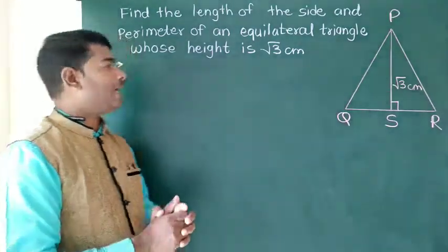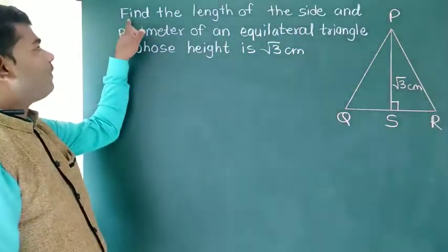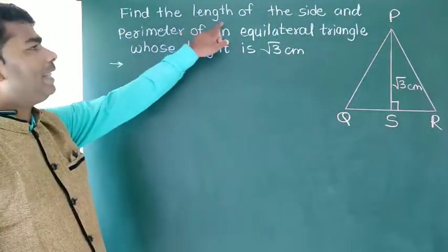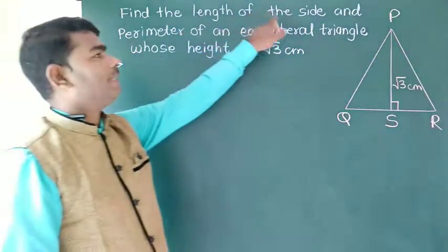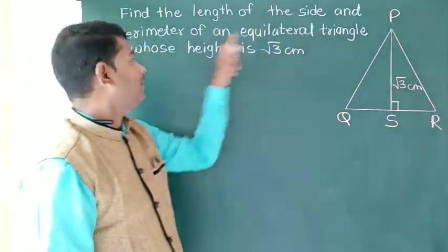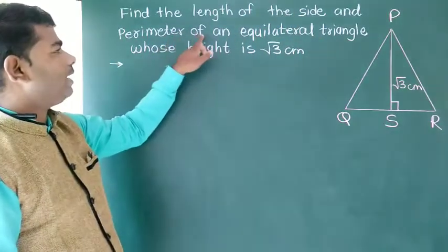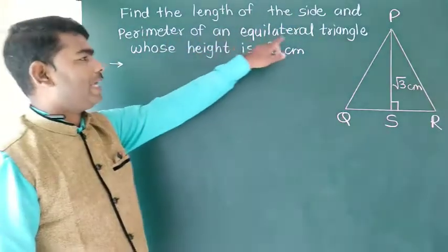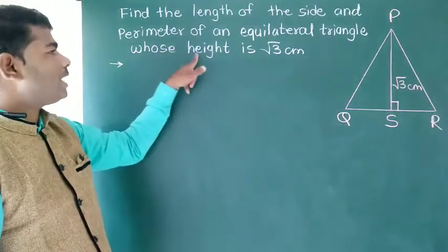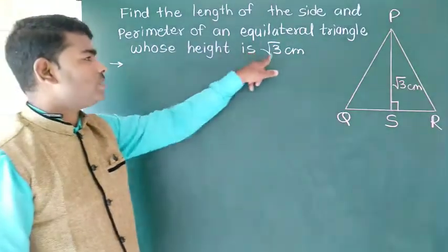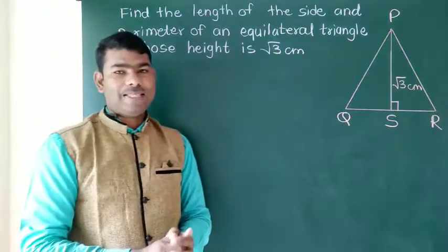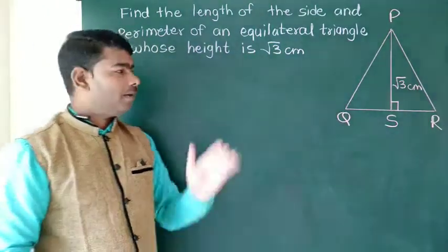Find the length of the side and the perimeter of an equilateral triangle whose height is root 3 cm.